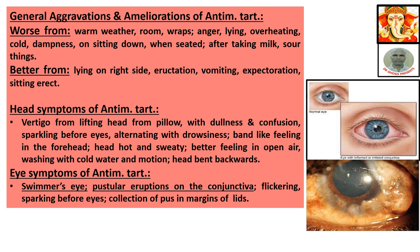Eye symptoms: swimmer's eye, pustular eruption on conjunctiva, flickering and sparking before eyes, collection of pores on the margin of the lids. Swimmer's eye means after swimming for a long time, the swimmer's eyes become reddened and inflamed, and vision becomes hazy. This total constellation of symptoms is called swimmer's eye.